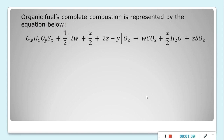In the equation, W, X, Y, and Z indicate the number of carbon, hydrogen, oxygen, and sulfur atoms, respectively.